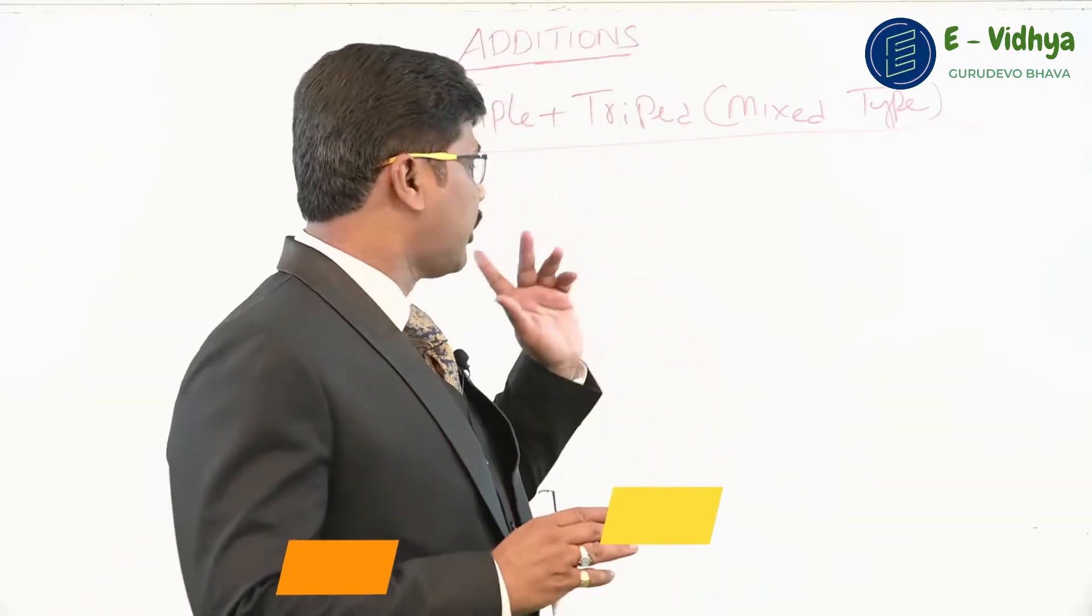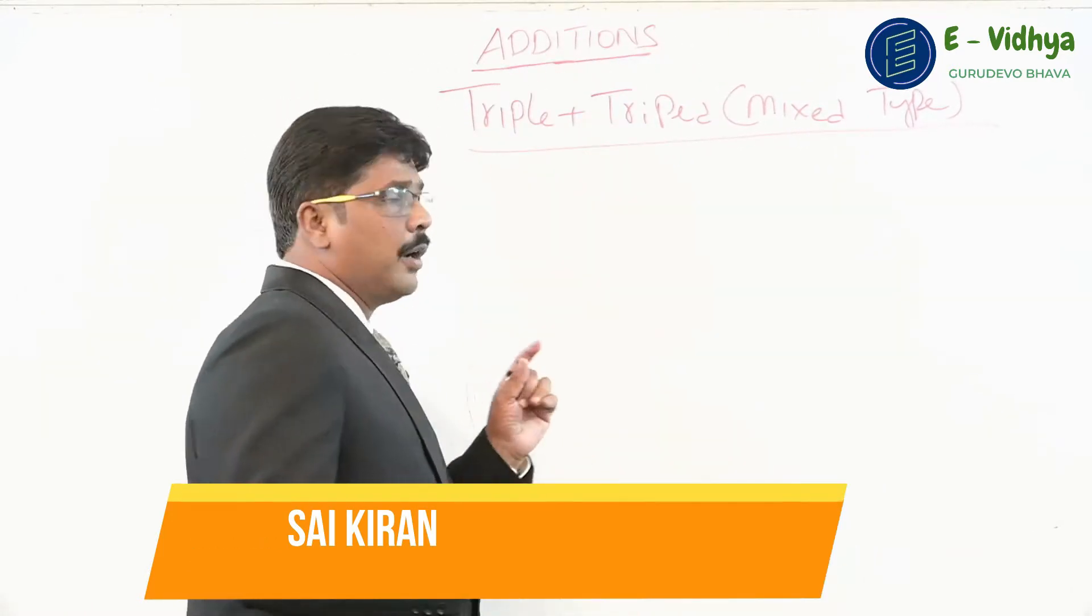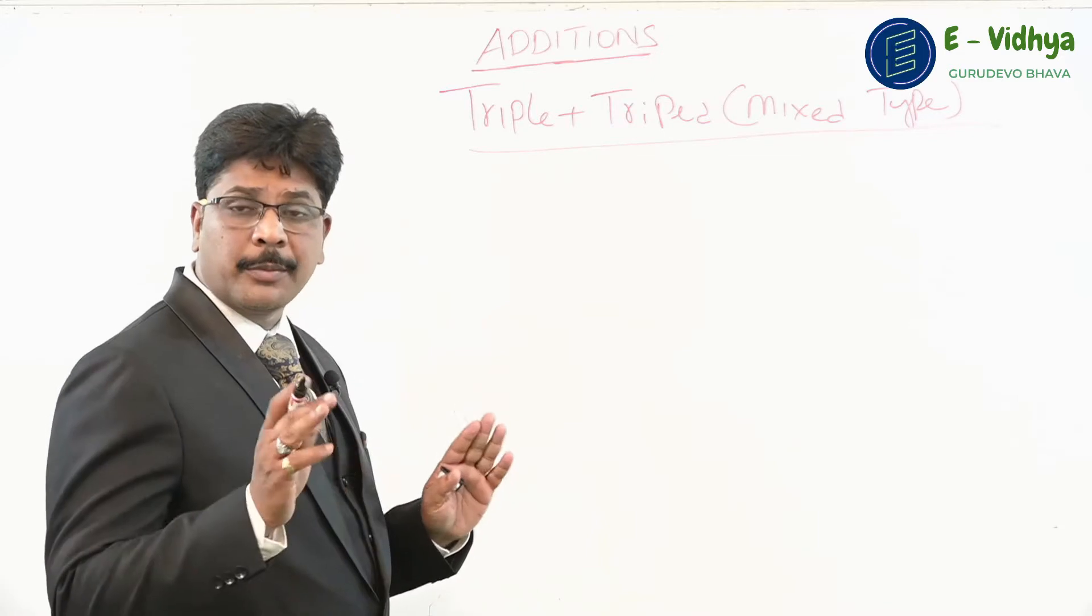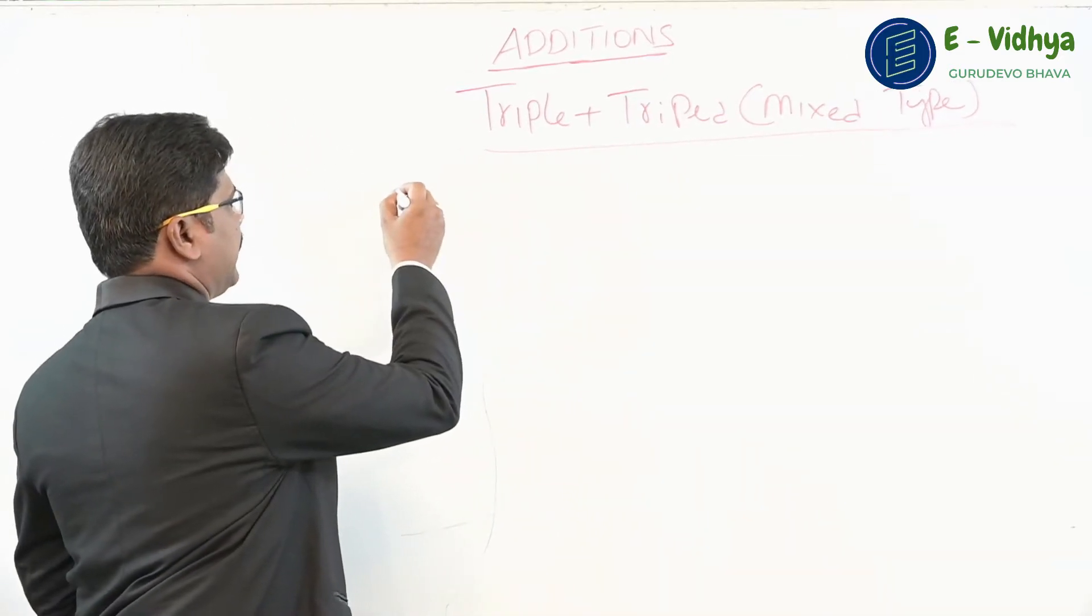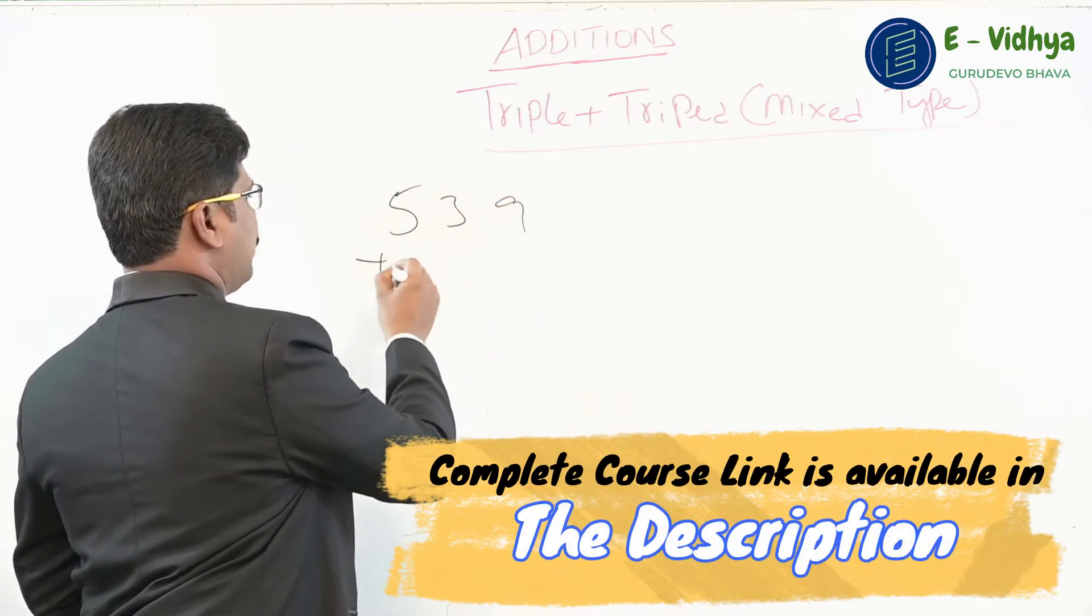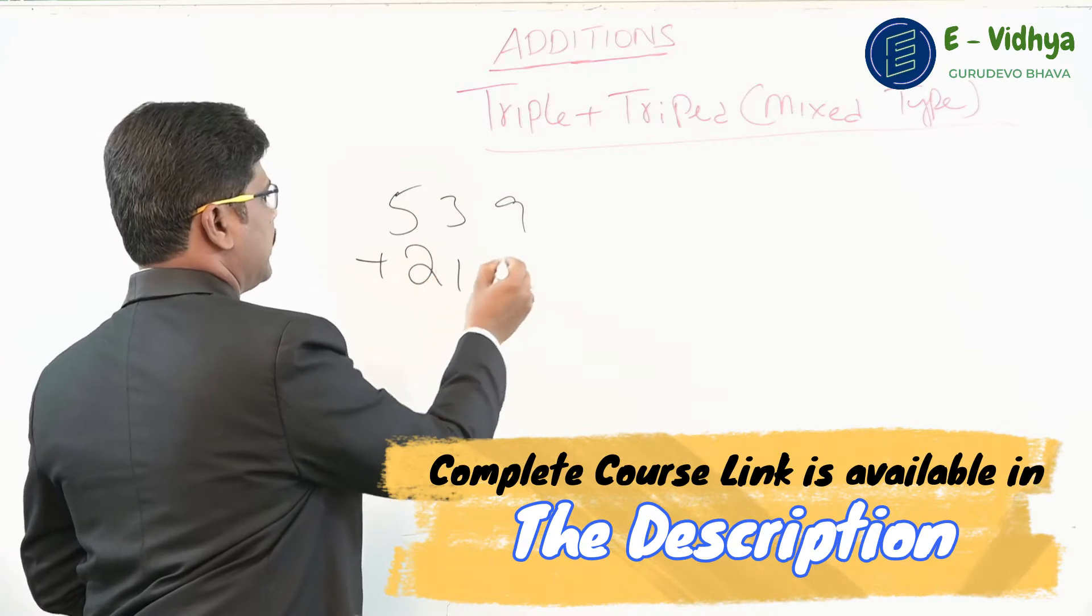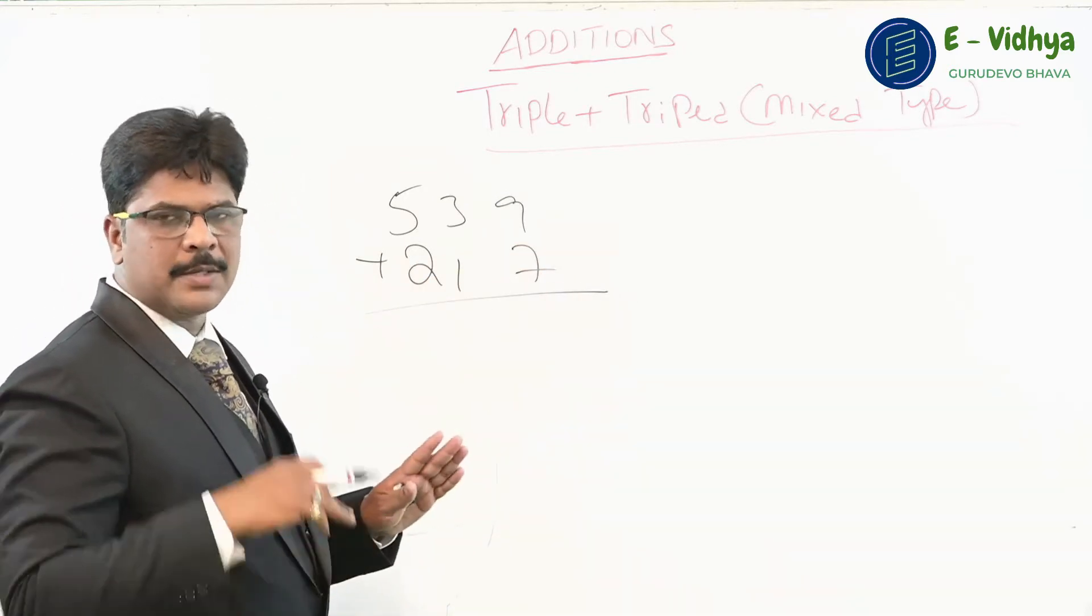Now let's go for the next type which is called the triple plus triple mixed type. What is mixed type? We'll get questions where one number we get carry and one number we get non-carry. Look at the problem: 539 added to 217. This is a mixed type problem.